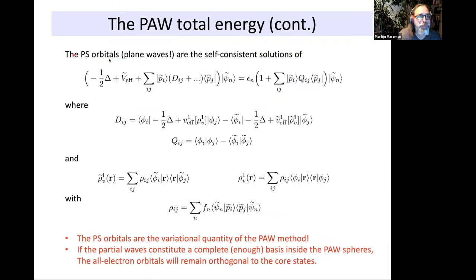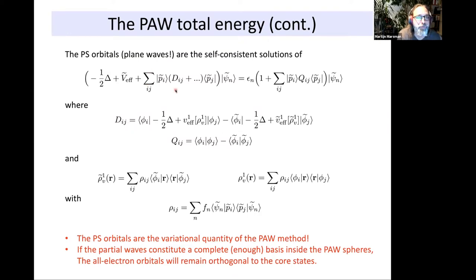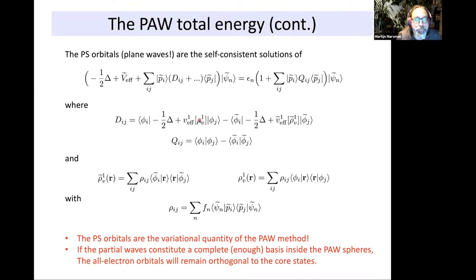The one-centered contributions on atom-centered radial logarithmic grids add the nodal features near the cores and ensure orthogonality between core and valence states. The essence of the PAW method is that, apart from the projector functions, there are no cross terms between quantities on the regular grid and quantities on the radial grid. Our Kohn-Sham equation now has additional terms involving the PAW strength parameters and augmentation charges, which are computed from the partial waves.